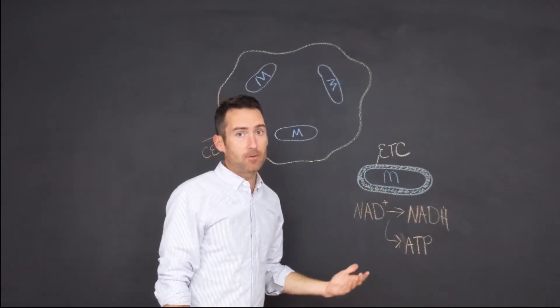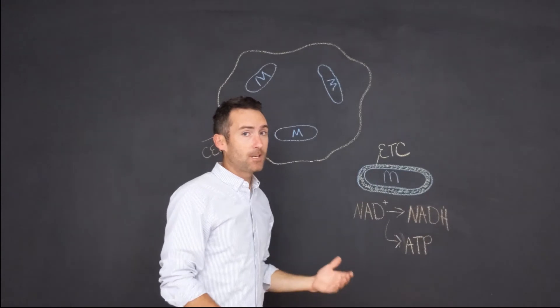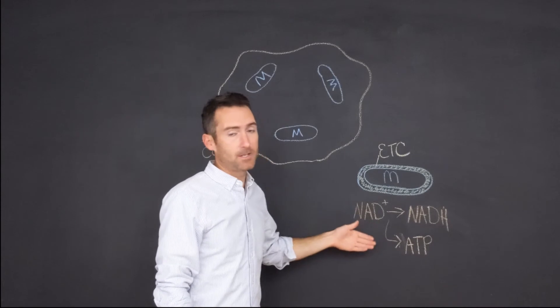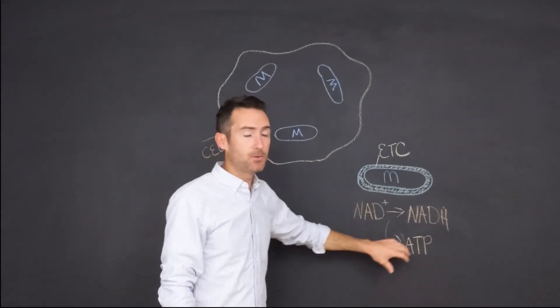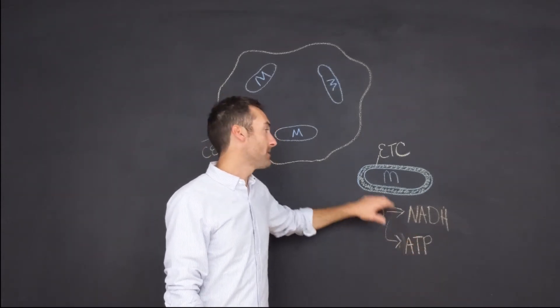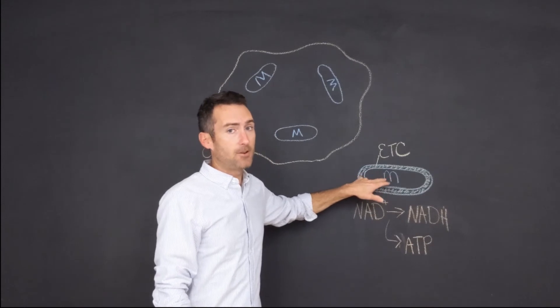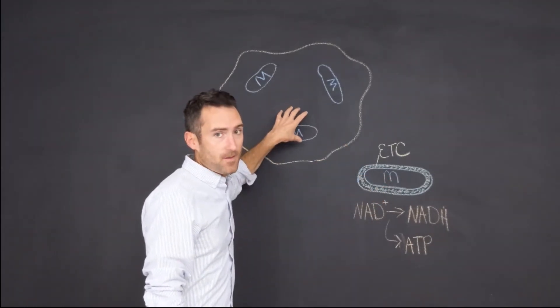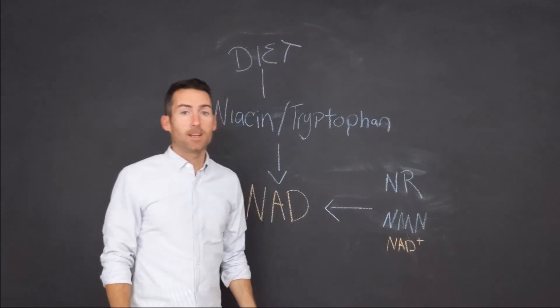age, our NAD levels go down. So we really need to make sure that we're getting the proper nutrients from our food or supplementing with NAD so that we can produce ATP to give these mitochondria the energy that they need to do their job, to give the cells the energy to do their job.